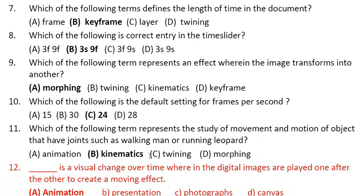Question 11: Which of the following terms represents the study of movement and motion of objects that have joints, such as a walking man or running leopard? In simple animation a circle just moves, but if you want to show a human being moving, you can't just shift the figure — there should be movement from the joints. That technique is known as kinematics.